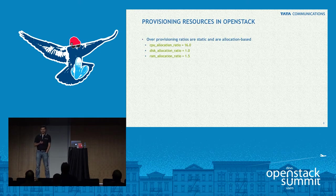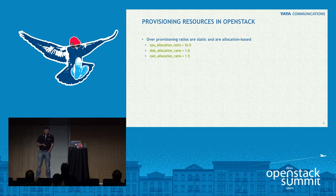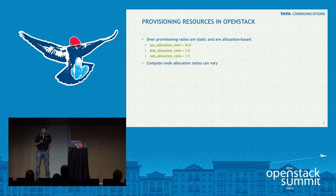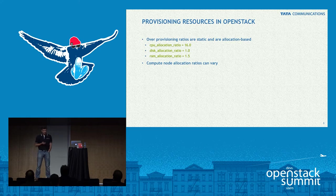How do you over-provision in OpenStack right now? You go to nova.conf and set the CPU allocation ratios. These are the default values and this assumes that all compute nodes will adhere to this setting on the scheduler. If you want to change this dynamically, you'll have to restart services. There are ways to set this on individual compute nodes where Nova compute services are running, but any change to these values requires restarts.